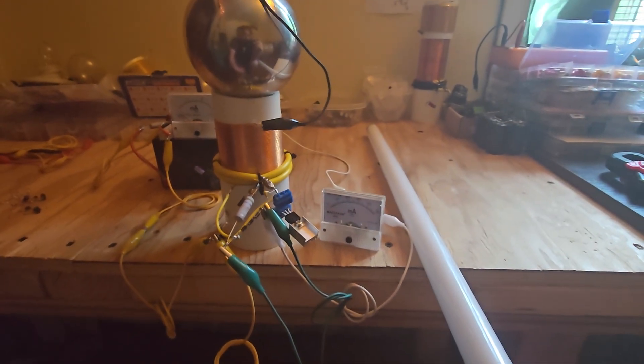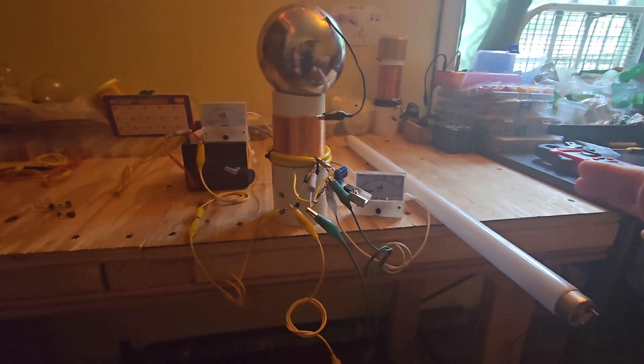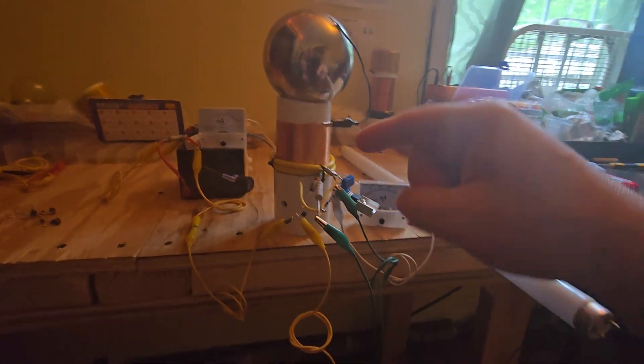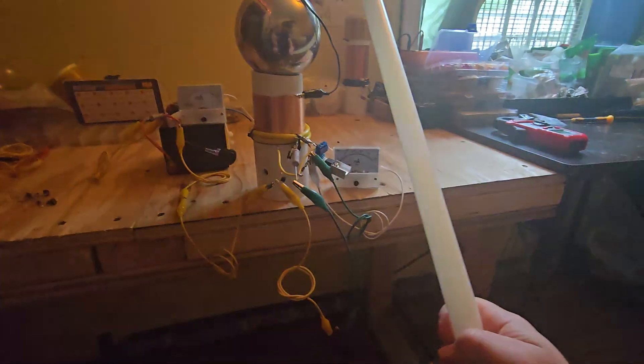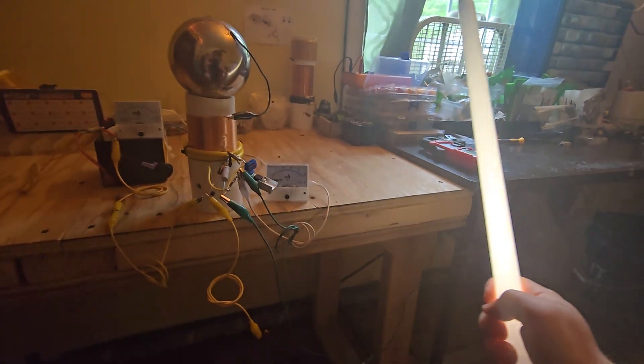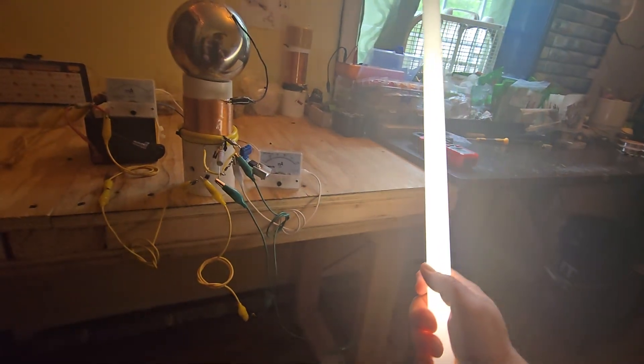And again, this is a real Tesla coil that outputs power through dielectric induction. There's no sparks when you get close to it. Turn it on again to show you. Notice how the power is in free space and a very powerful field, dielectric field, at a certain distance from the coil.